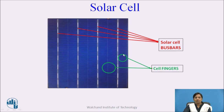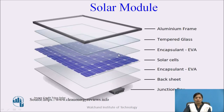A single solar cell generates a voltage in the range of 0.5 volt to 0.8 volt, which is very small. Different combinations of solar cells — parallel, series, or parallel-series — are used to increase efficiency. This combination of solar cells is called a solar module. On both sides of the solar cell, EVA sheets are used to protect it from shocks, vibration, and dust.